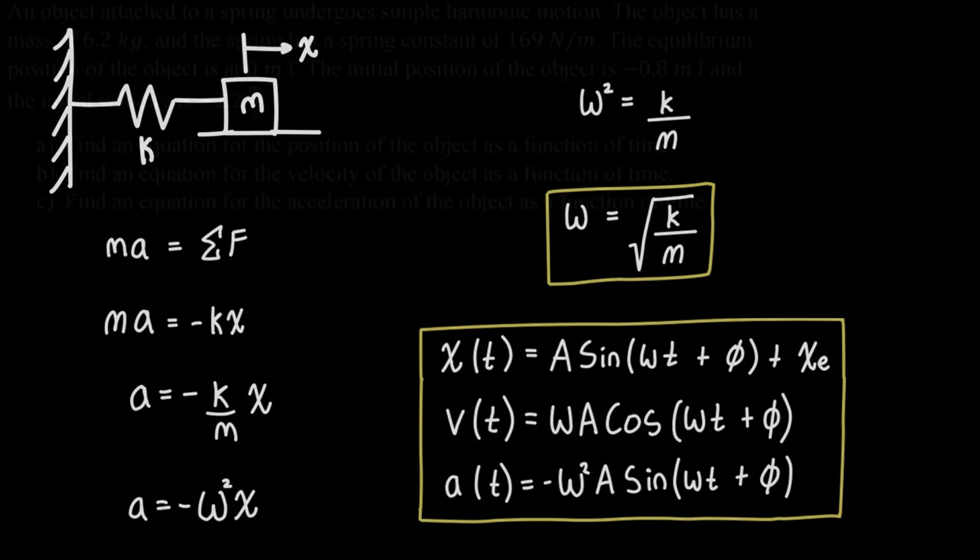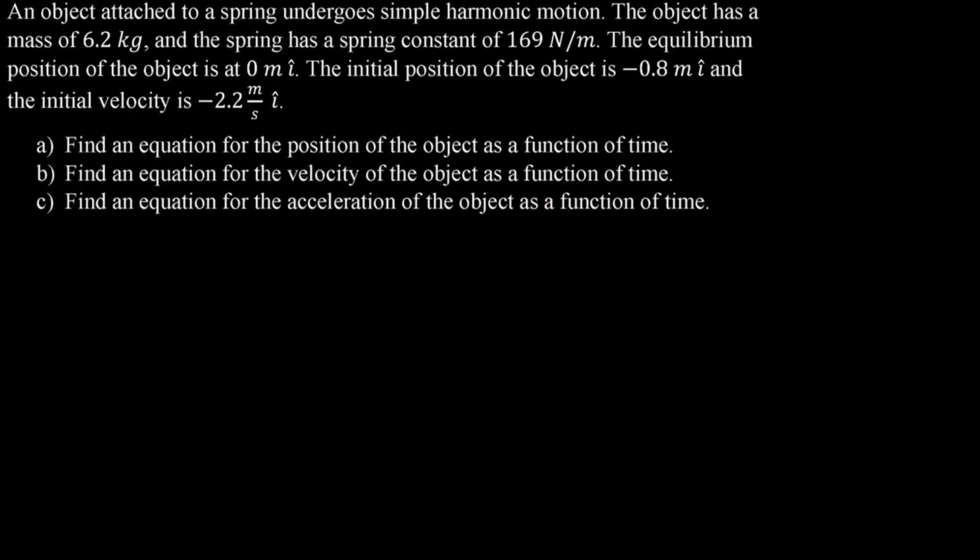Let's take a look at a problem. We've got an object attached to a spring that undergoes simple harmonic motion. The object has a mass of 6.2 kilograms and the spring has a spring constant of 169 newtons per meter. The equilibrium position is zero meters in the x-direction, the initial position is negative 0.8 meters, and the initial velocity is negative 2.2 meters per second. The question asks us to find equations for position, velocity, and acceleration.